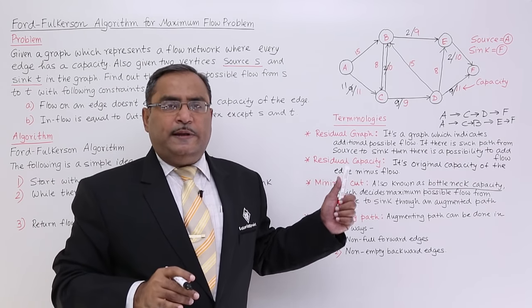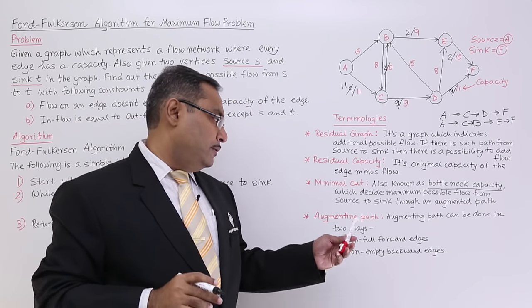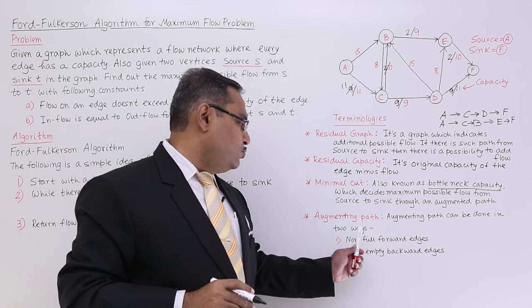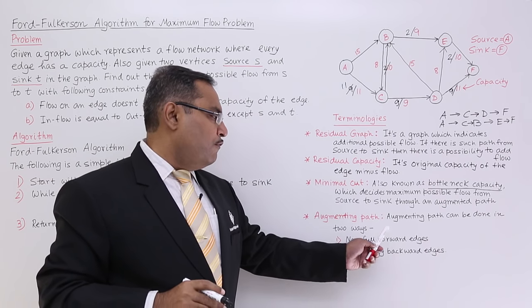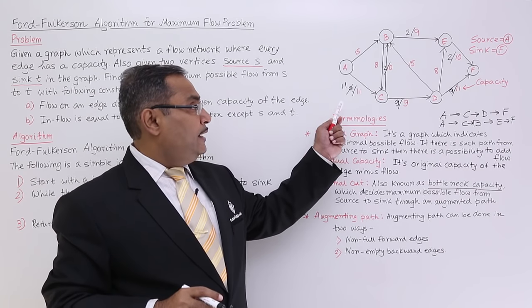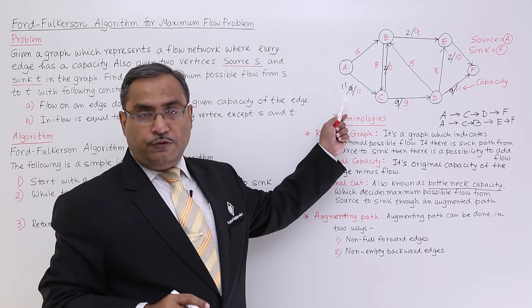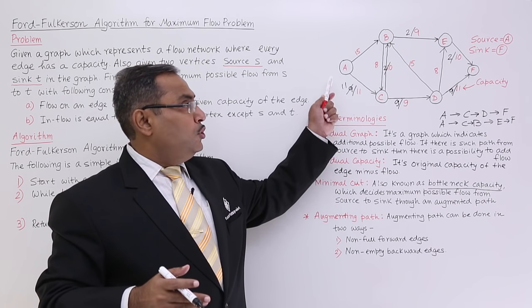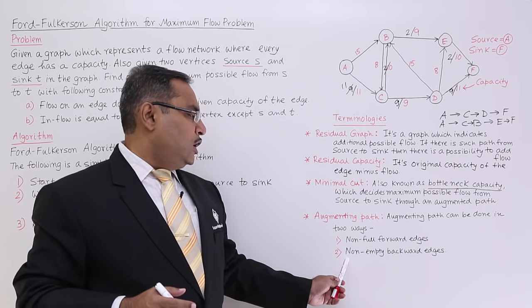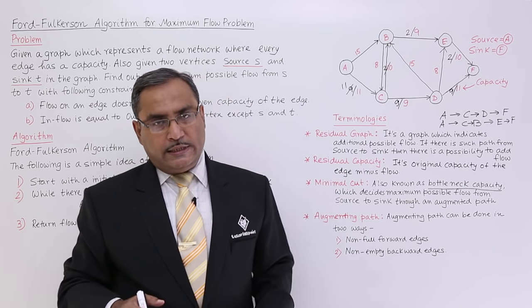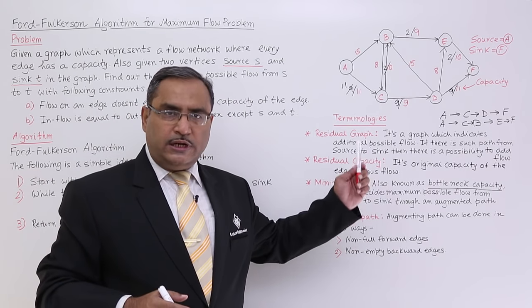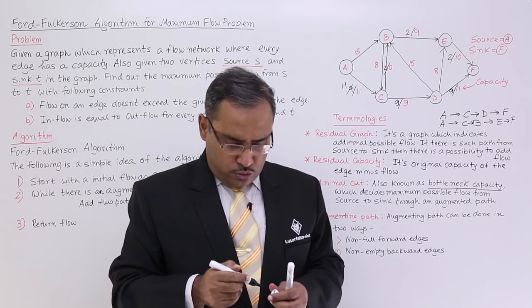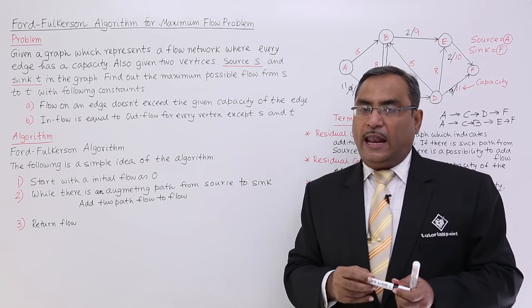Augmenting path can be done in two ways. One is via non-full forward edges — as seen earlier where the initial flow was 9 and the capacity was 11, so it is non-full. Another one is via non-empty backward edges. We shall discuss non-empty backward edges with an example for better understanding. Let me now discuss the algorithm.